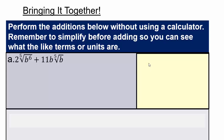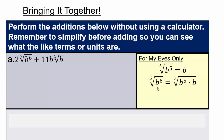Let's do a review quickly. We know the fifth root of b to the fifth — that's the radical notation — which means the fractional power b to the power of 5 over 5, which equals b. But we have b to the sixth, which we can break as b to the fifth times b. We know that fifth root of b to the 5 is b, and then there will be an additional b inside.